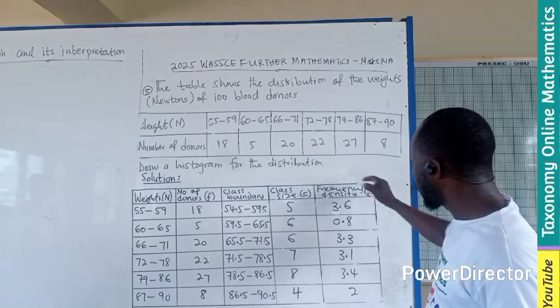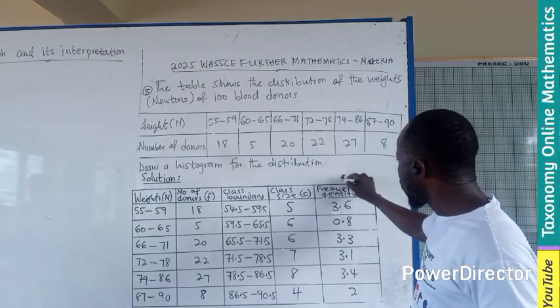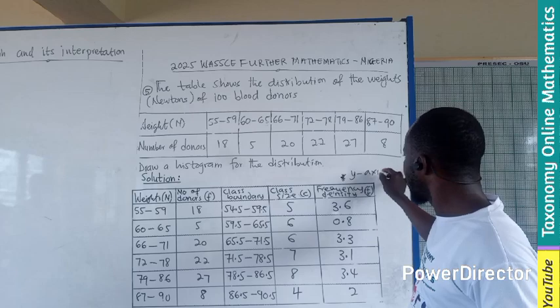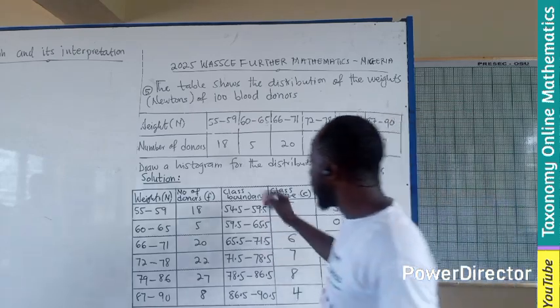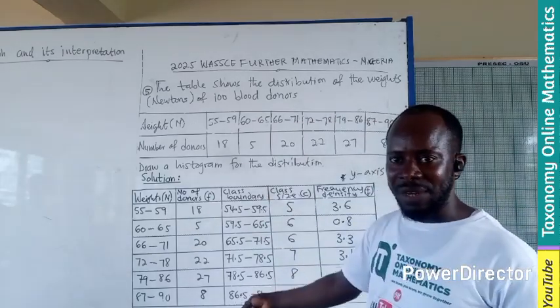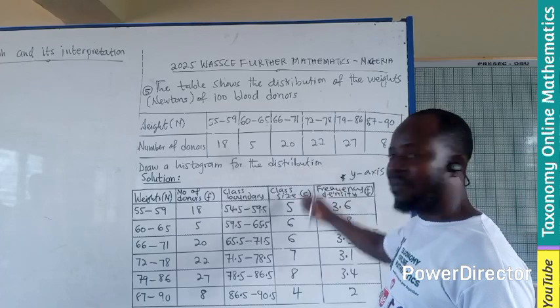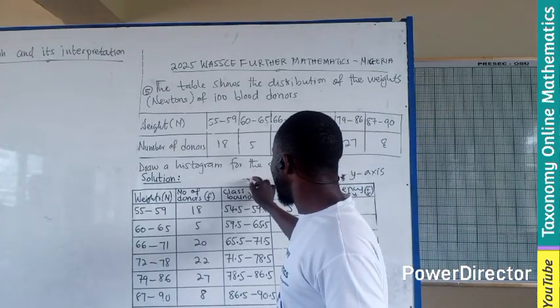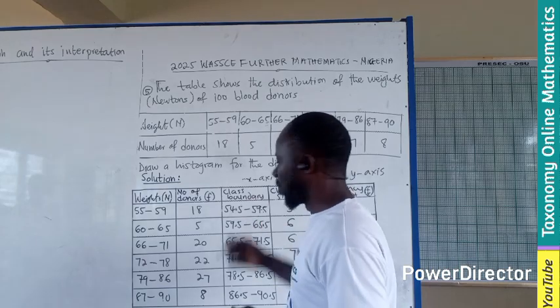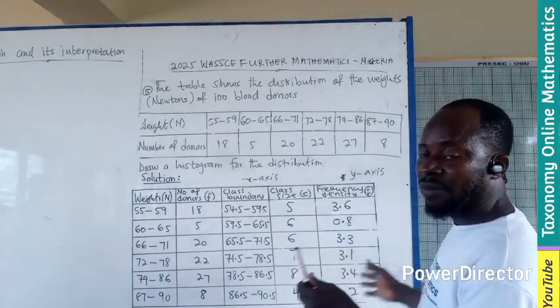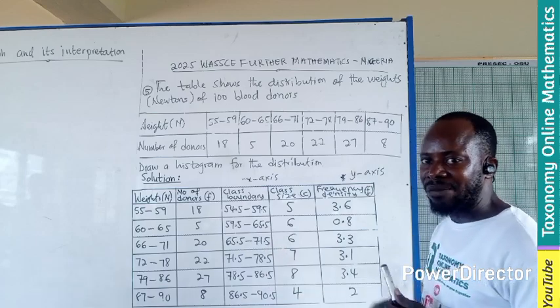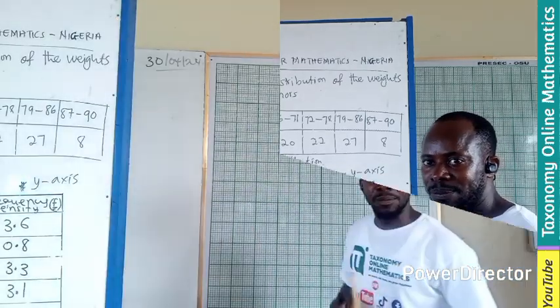So we are going to plot the frequency density on the y axis. Then we are going to indicate the lower class boundary with their respective class interval on the x-axis. So now let's transfer this point we have onto the graph and see how well we can easily plot our histogram.